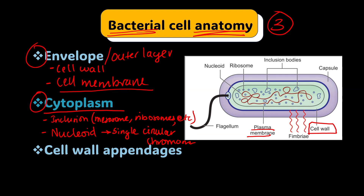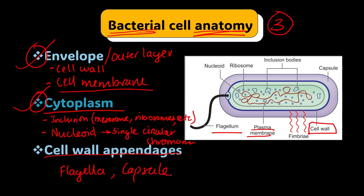So we have the envelope and the cytoplasm present in every bacterium. Some bacteria also have additional structures called cell wall appendages — structures arising from the cell wall. These include the flagellum, which is useful for locomotion; the capsule, which is an additional outer covering; and fimbriae or pili, which are organs of adhesion helping bacteria adhere to foreign surfaces.